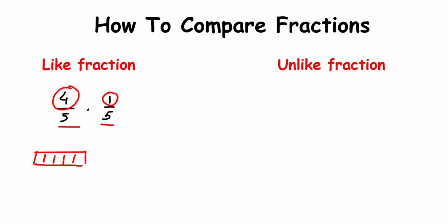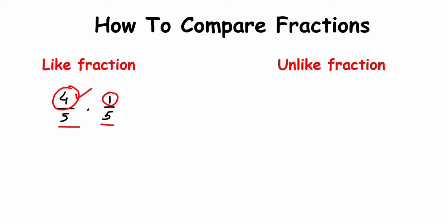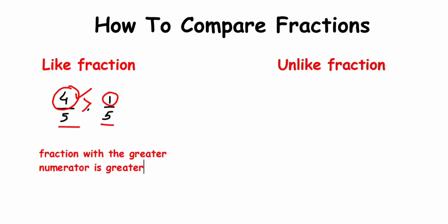Suppose I have a rectangle with five equal parts, out of which four are shaded — one, two, three, and four. For the second fraction, 1/5, I make another rectangle with five equal parts where only one part is shaded. You can see that four is greater than one, so 4/5 is greater than 1/5. In like fractions, you just compare the numerator — the greater the numerator, the greater the fraction.